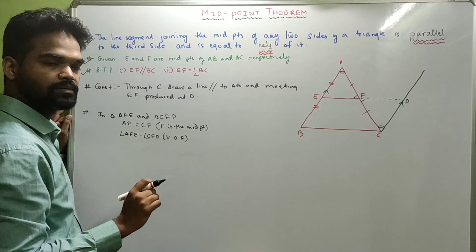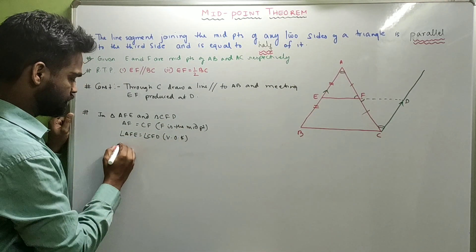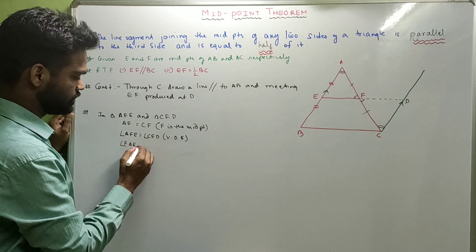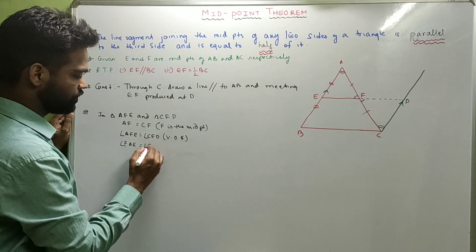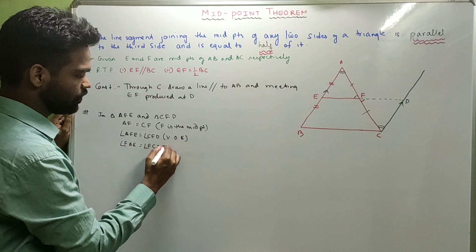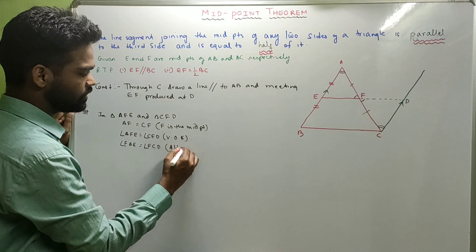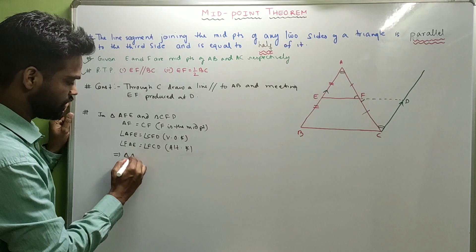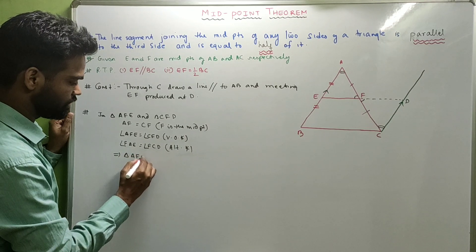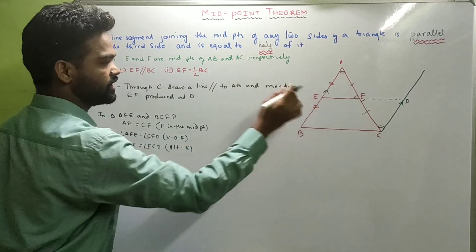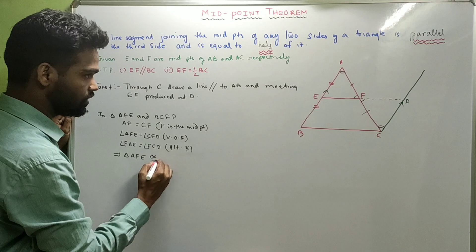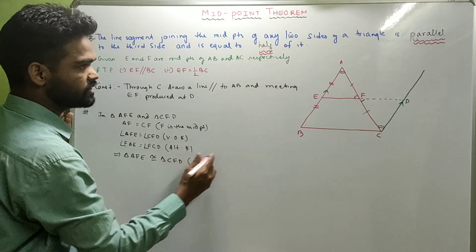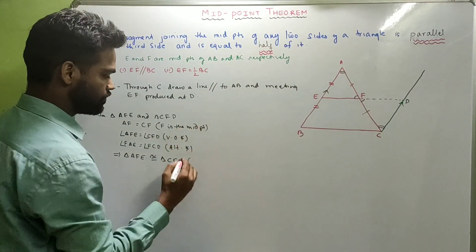Angle FAE is congruent to angle FCD — these two angles are interior alternate angles, because AB is parallel to CD. Which means angle FAE is equal to angle FCD. Why? Alternate angles. Therefore triangle AFE is congruent to triangle CFD, by Angle-Side-Angle.